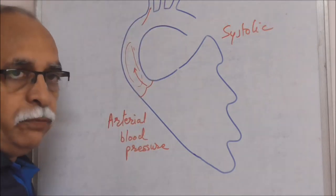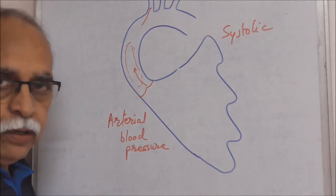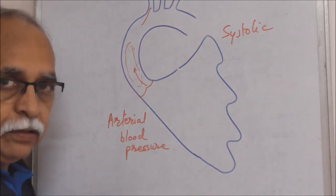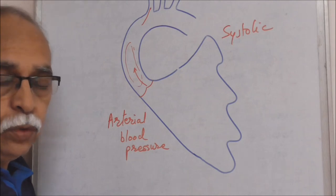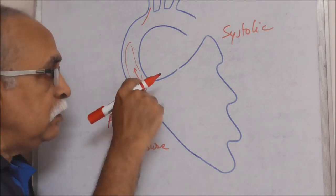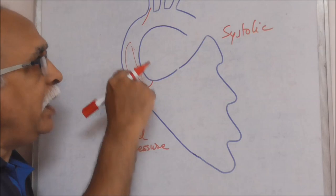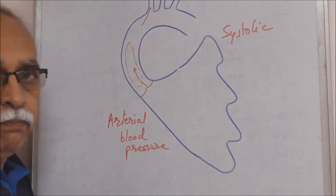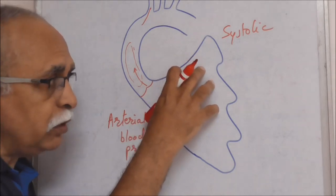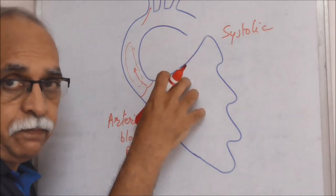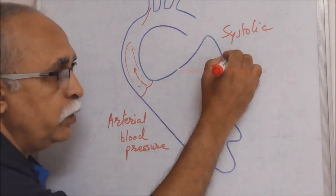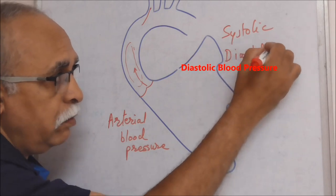The aorta will manage to distribute the blood it has just received from the ventricle, and that will continue until it receives the next lot of blood at the next ventricular systole. But just before the ventricle starts contracting again, the amount of blood contained in the aorta and arteries is minimum. At this time the ventricle has undergone complete relaxation — the ventricle is in the diastolic phase — and the pressure of blood in the arteries is minimum. This is what is called diastolic blood pressure.